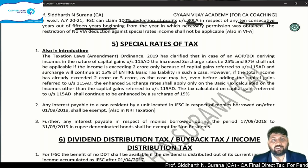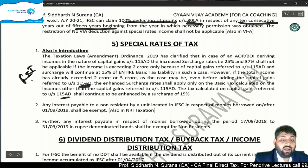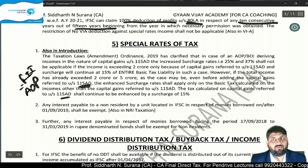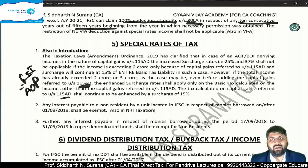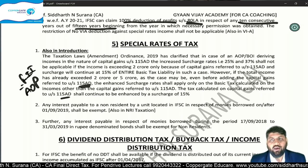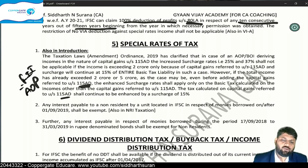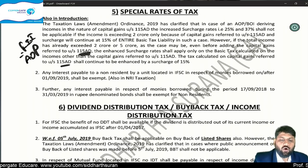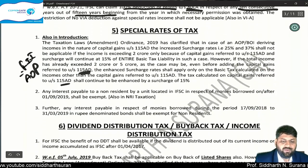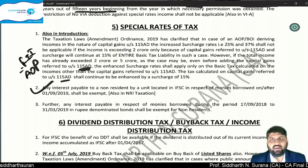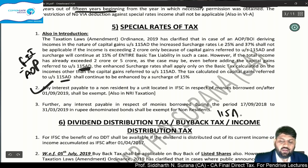Next chapter: Special Rates of Tax. Regarding Section 115AD for FIIs — if FII is an AOP and income exceeds Rs. 2 crore, then the new surcharge of 25%/37% is applicable. But if income exceeds 2 crore only due to capital gains under 115AD, then surcharge remains 15%. Also, the same IFSC exemption applies here: interest earned by a non-resident from IFSC on or after 1st September 2019 is exempt. Another amendment in Section 115A: interest on rupee-denominated bonds where borrowing took place during 17th September 2018 to 31st March 2019 — that interest income is exempt for the non-resident.